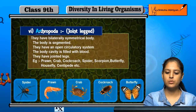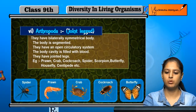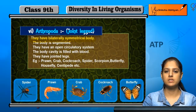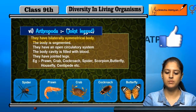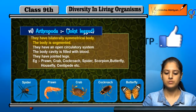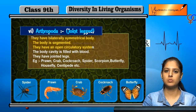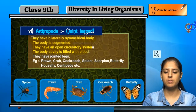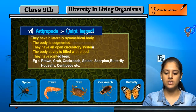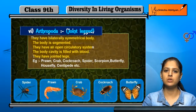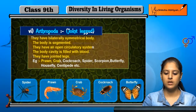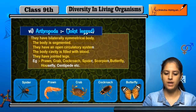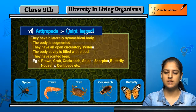Next is Arthropoda, or joint-legged animals. They are bilaterally symmetrical, with the left and right portions of their body being the same. They have segments and an open circulatory system, with a body cavity filled with blood. They have jointed legs. Examples include prawn, crab, cockroach, spider, scorpion, butterfly, housefly, centipede, etc.